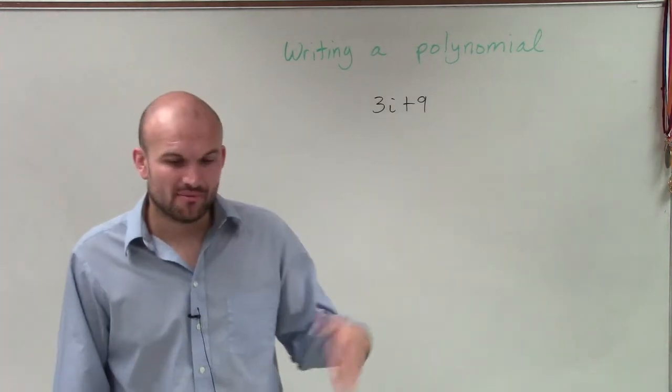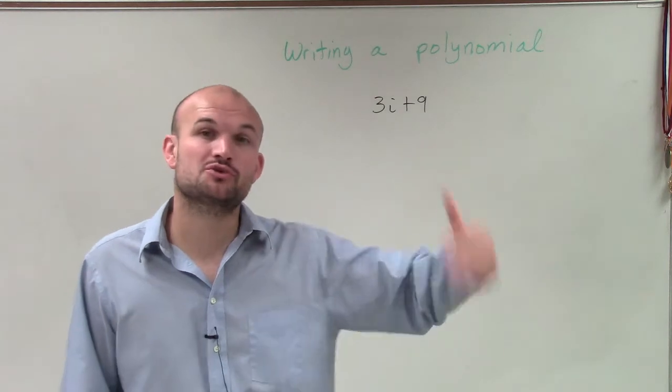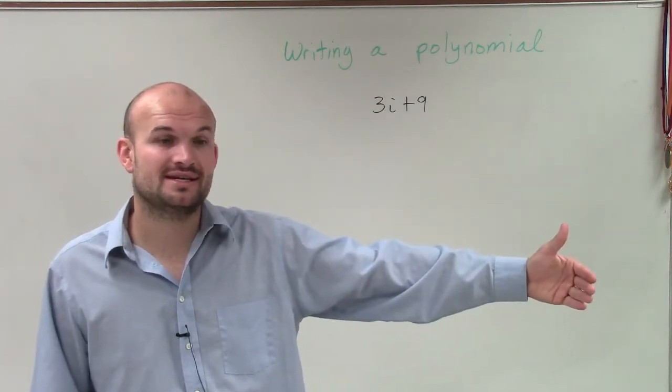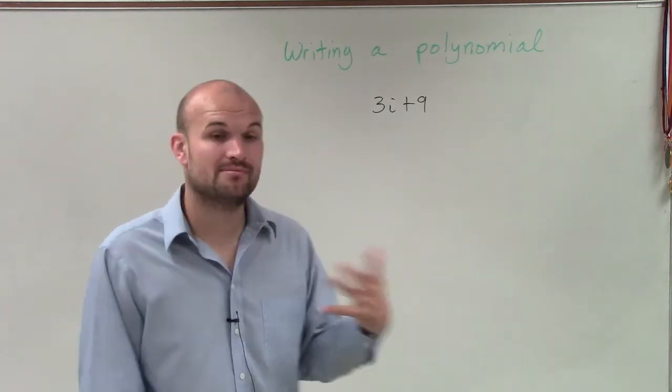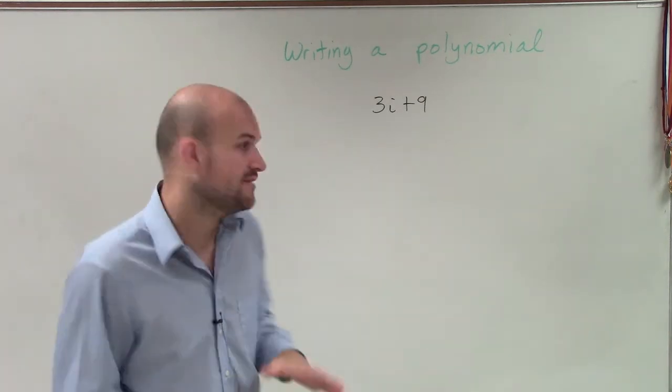It's just 3i plus 9. But remember, when we talked about introducing the square root of a zero, we need to always include the positive and the negative. And that's the exact same thing when we have an imaginary.